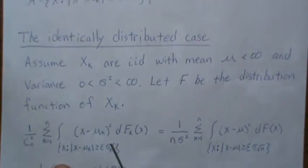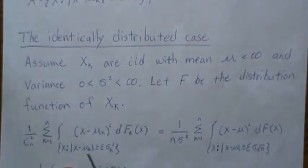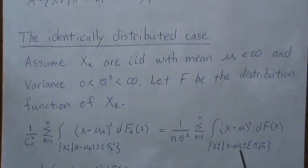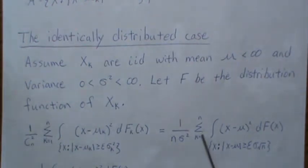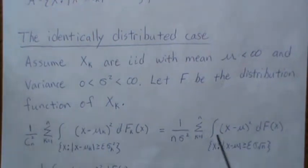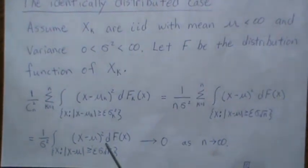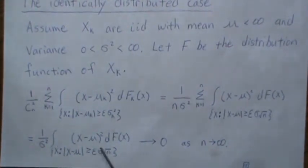Since we're in the identically distributed case, the mean is a constant mu, sigma_k squared is just the constant sigma squared, and c_n squared is the sum of variances, which equals n times sigma squared. Because there's no k-dependence in the integrand, summing the same quantity n times gives n times that quantity, and the n's cancel, leaving us with a simplified expression.